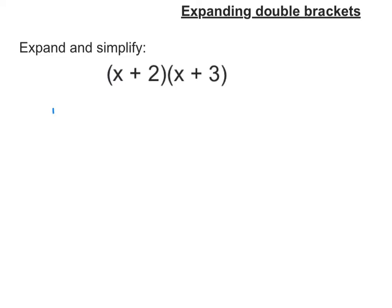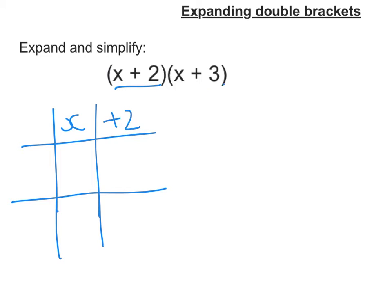How we're going to do that is by drawing out a grid. Here's my grid. And at the top I'm going to put the x and the plus 2 from the first bracket. And along the side I'm going to put x and the plus 3.